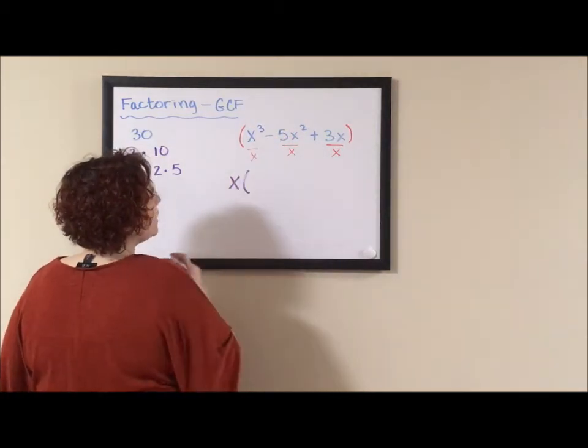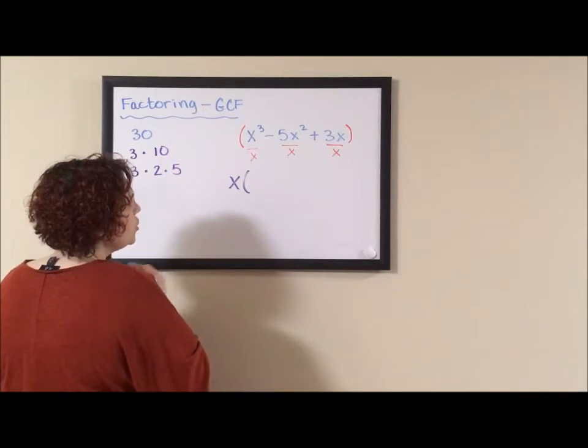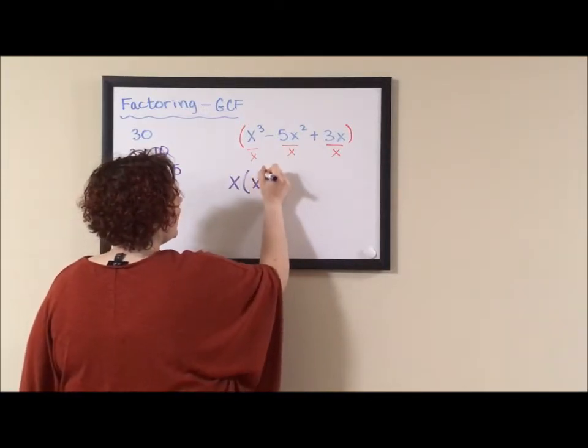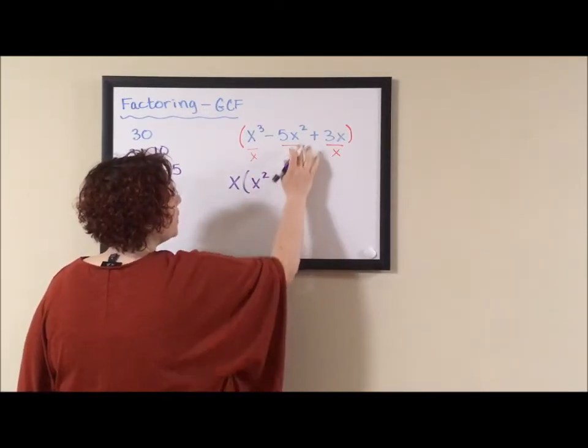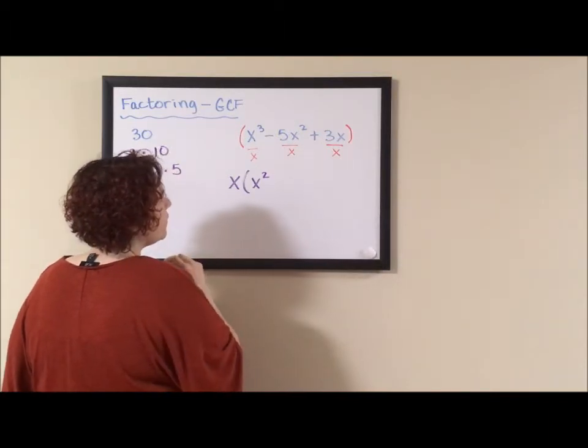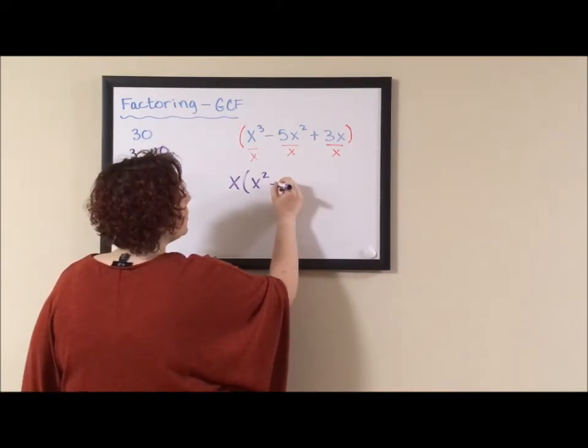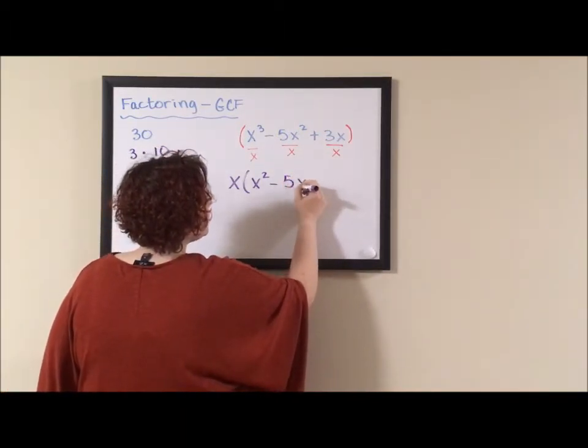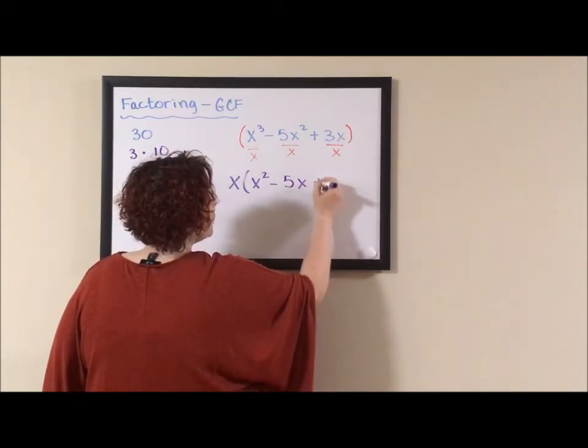Well, when we divided one of the x's out of x cubed, we're left with two x's. When we factor one of the x's or divide one x out of 5x squared, we end up with minus 5x. And these guys cancel leaving us with 3.